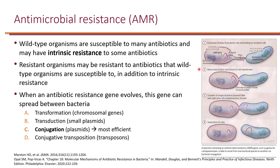One characteristic of bacteria is that in addition to their chromosome, they also have circular DNA referred to as a plasmid. Because it is small compared to the chromosome, a plasmid can easily be transferred to other bacteria. In conjugation, which is the most efficient way of transferring resistance genes to other species, self-transferable plasmids mediate direct contact by forming a mating bridge between cells.